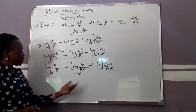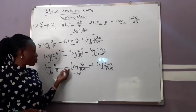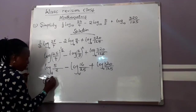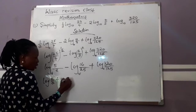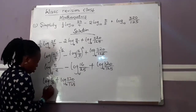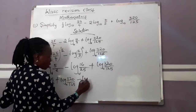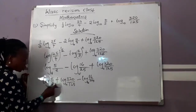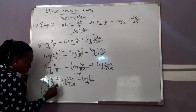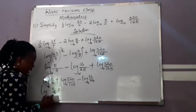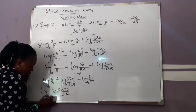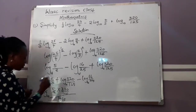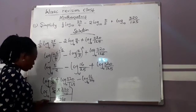We bring the two sides together: the positive terms on one side — log 5 over 2 plus log 320 over 125, all to base 10 — minus log 16 over 25, all to base 10. Since they are all in base 10, we combine: log of (5 over 2 multiplied by 320 over 125, all divided by 16 over 25), base 10.